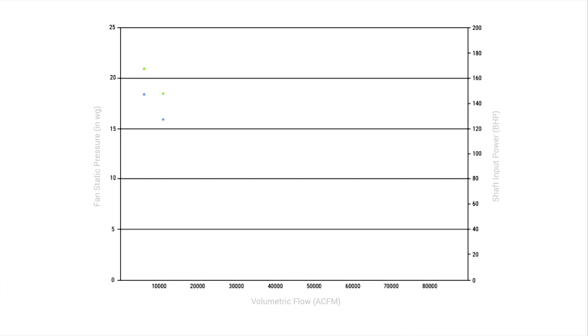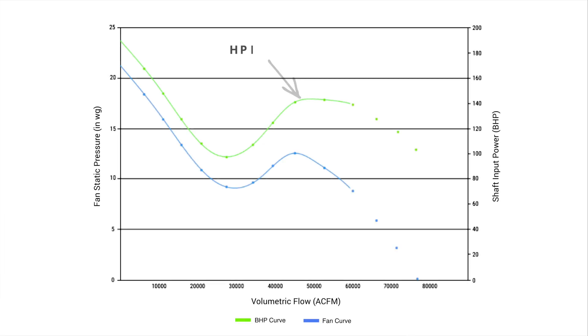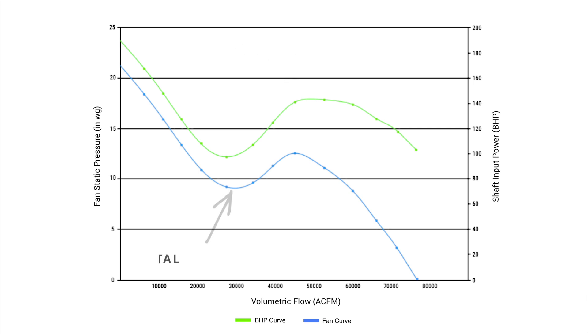Performance curves for axial fans have a non-overloading horsepower characteristic, meaning power consumption peaks and starts to drop off toward the wide open point of the curve. Axial fan curves also have a stall region located around the middle of the curve where performance is unstable.